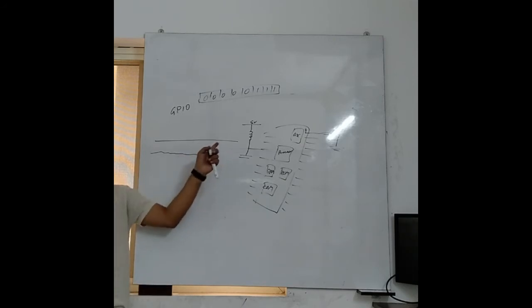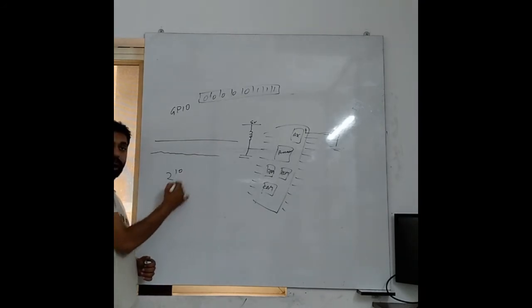So our reference is 5 volts and ADC is 10 bits means it can divide 5 volts in steps of 10 bits. That is 2 to the power 10. It is 1024. In total 1024 steps it can divide.